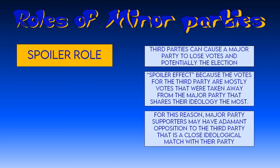The role that third parties have with the biggest impact on all of us is what we call the spoiler role. Third parties can cause a major party to lose votes and possibly lose the election. We call this the spoiler effect because votes for the third party are most likely taken away from the major party with the closest similar ideological beliefs. So if there's a third party on the left and people vote for it, we can assume most of those voters would otherwise choose the Democrat.